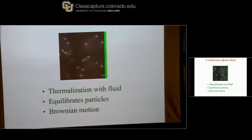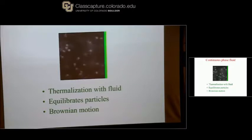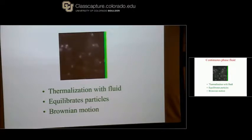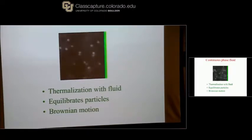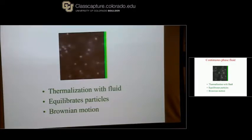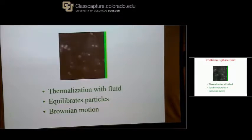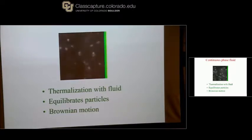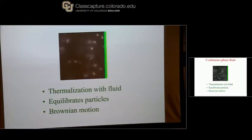Einstein won his Nobel Prize for understanding Brownian motion. The important thing is that the particles, just because of the thermal energy and because they're moving in the fluid, are sampling all different phase space — all different volumes of phase space. This is a way of ensuring that the particles are thermalized, that they can explore all volumes. Thermal energy does this here, whereas for a granular material, you have to shake it to make it find some new configuration.